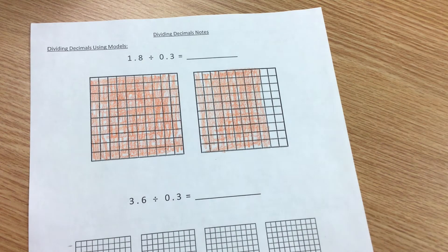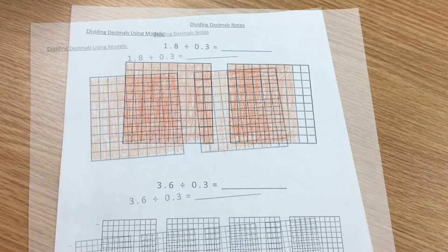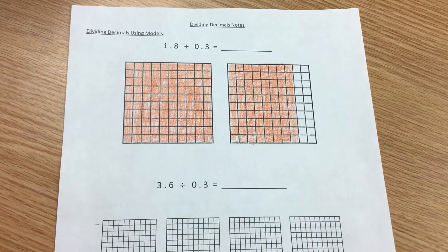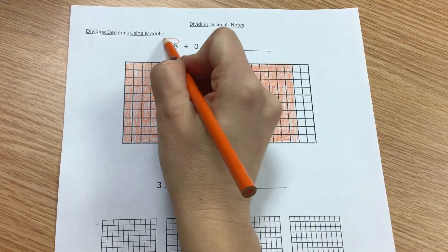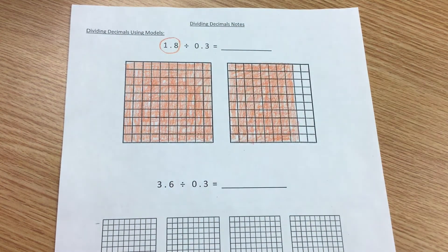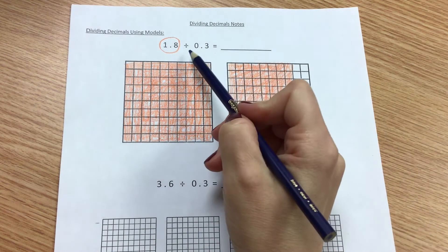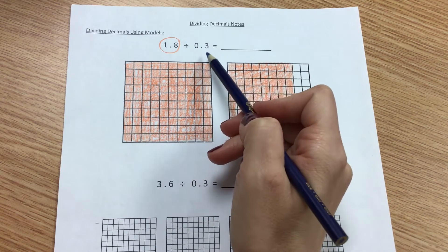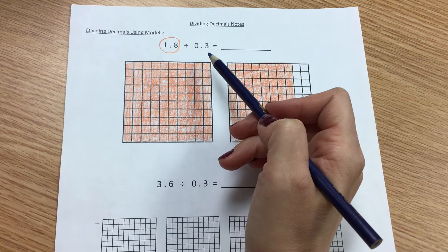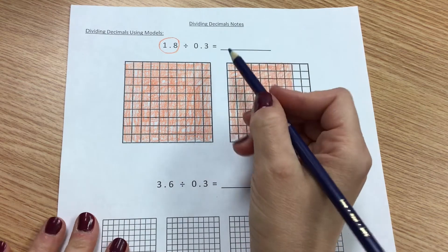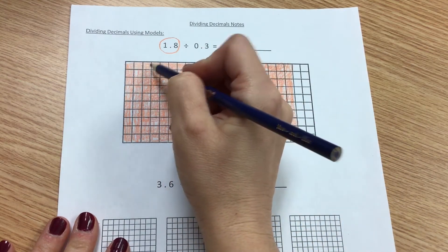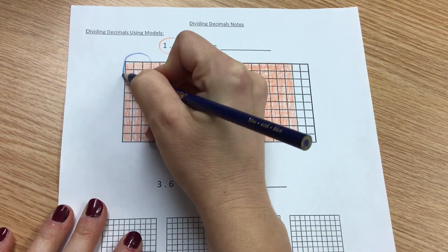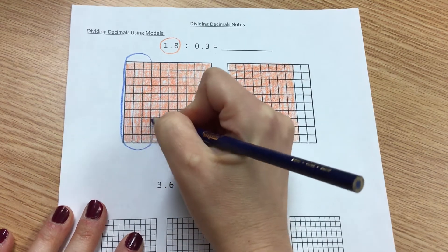Give me a thumbs up if your model also shows 1 and 8 tenths. Now we've taken care of this 1 and 8 tenths — I'm going to circle it in orange because I have it shaded in orange. Now I'm going to take care of dividing it by 3 tenths. Every 3 tenths I'm going to circle in blue.